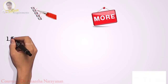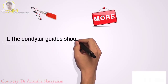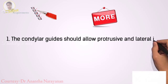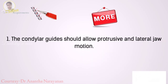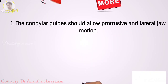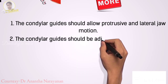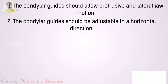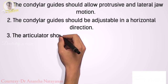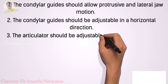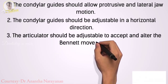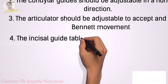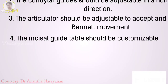Now for additional requirements: the condylar guides should allow protrusive and lateral jaw motion; the condylar guides should be adjustable in a horizontal direction; the articulator should be adjustable to accept and alter the Bennett movement; and the incisal guide table should be customizable.